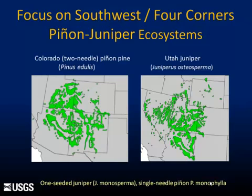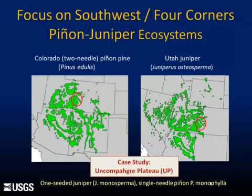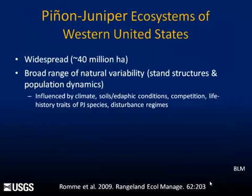Two of the more dominant species are one-seeded juniper and single-needle pinyon. I'll focus a little bit on the Uncompahgre Plateau — about a 600,000-hectare landscape in western Colorado, with about 250,000 hectares covered by pinyon-juniper ecosystems, sitting on the eastern edge of the Colorado Plateau. PJ systems are widespread, estimated at roughly 40 million hectares, certainly one of the more widespread major vegetation types of the western U.S.